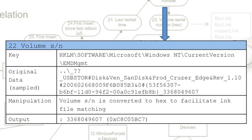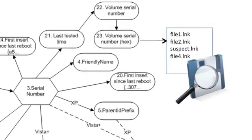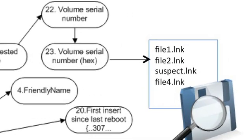This serial number is stored in standard numerical notation, and I convert it to hexadecimal so that it can be used to link up to the link files on the system. Link files have a volume serial number both of the birth volume and of its current volume. The last tested time can therefore be used to find out whether any link files are related to a specific USB device. If you've got numerous devices and lots of link files on a system, this is a very difficult task to undertake manually, whereas if it's automated it can be done very quickly.